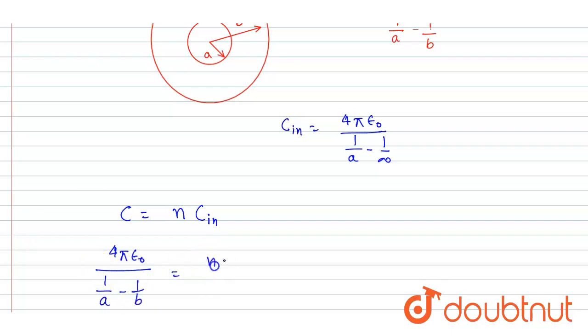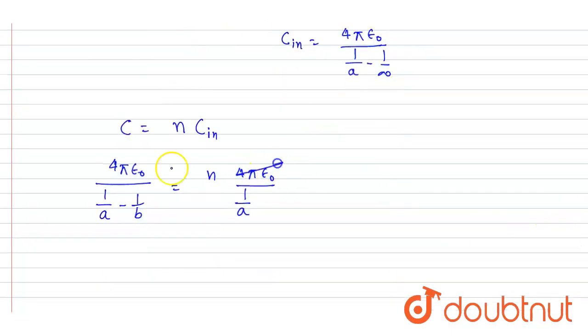Earlier the capacitance was... so this is 0, 1 by infinity. So I will write this. So this 4π epsilon naught will get cancelled out.